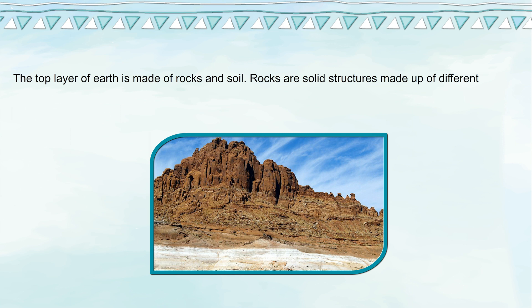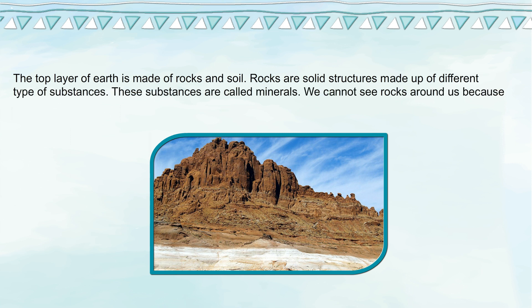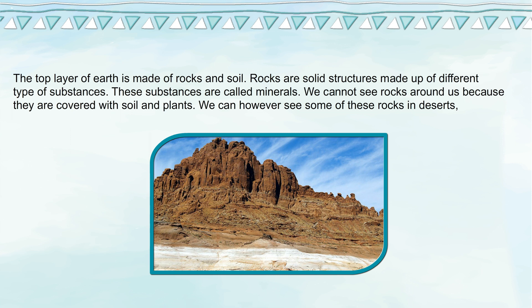Rocks are solid structures made up of different types of substances called minerals. We cannot see rocks around us because they are covered with soil and plants. We can, however, see some of these rocks in deserts, mountains, and the cliffs at the sea.